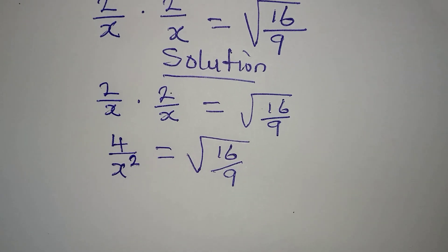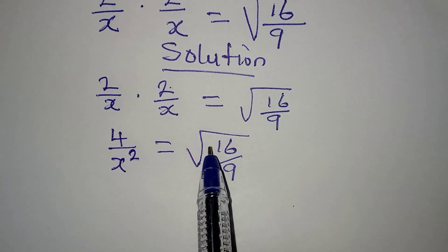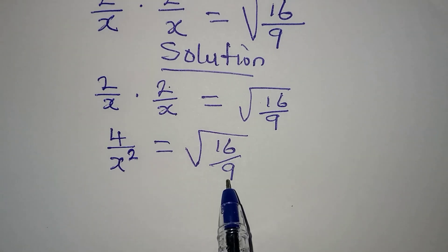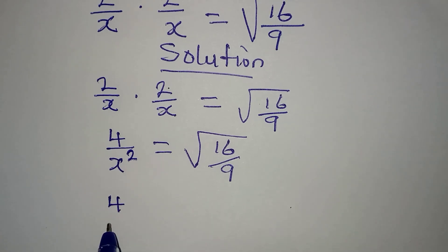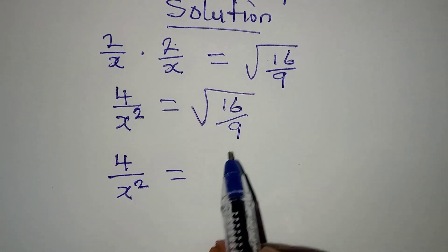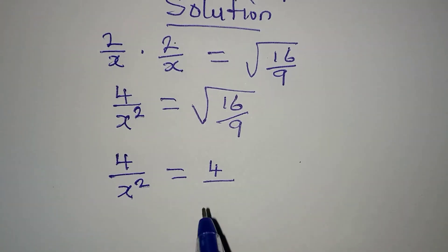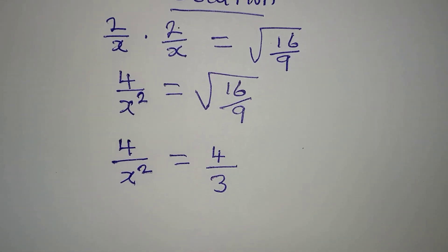This will now be equal to square root of 16 over 9. You might be trying to eliminate the square root from here, but 16 and 9 are both perfect squares, so 4 over x squared will be equal to square root of 16, which is 4, and square root of 9, which is 3.